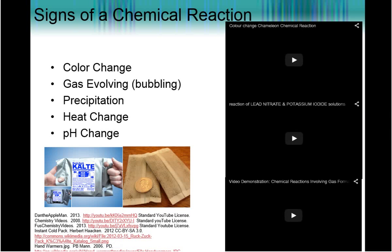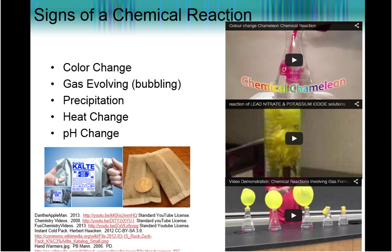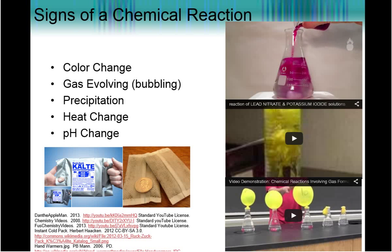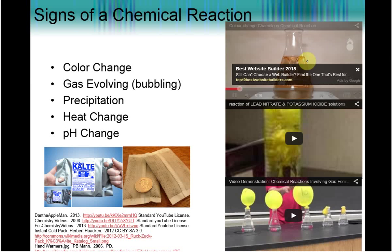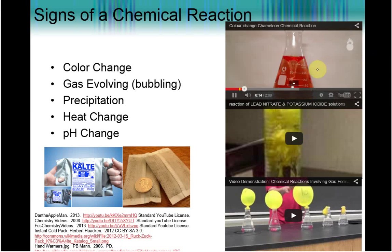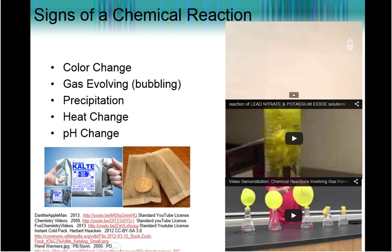Now, there are technically five main signs of a chemical reaction. The first is color change. Now, this is not the color change where you take Kool-Aid, you add some ice, and as it dilutes down, it turns a lighter color. It's something like this where you had two colorless solutions that change color into something completely different.